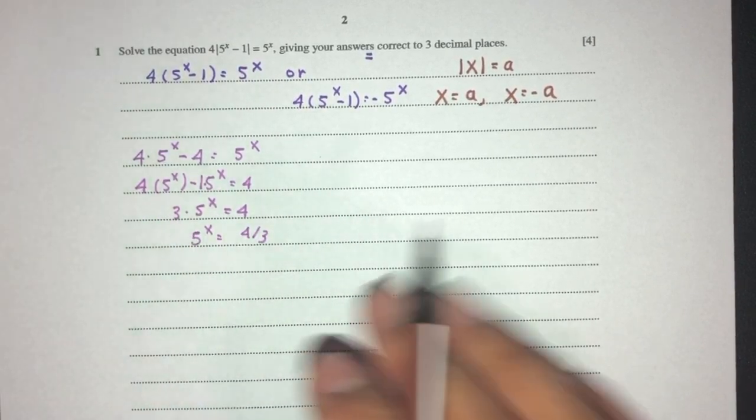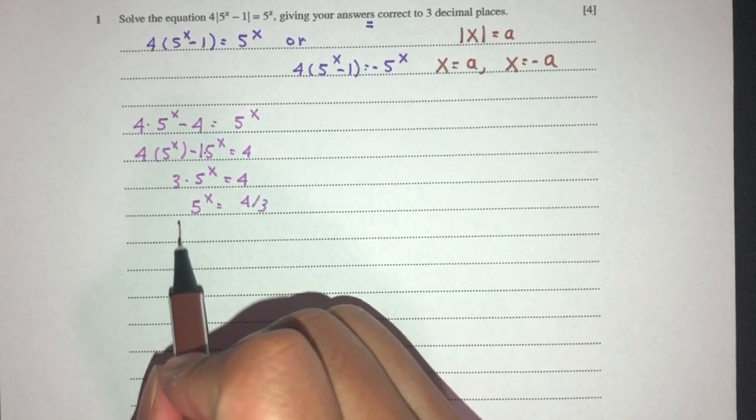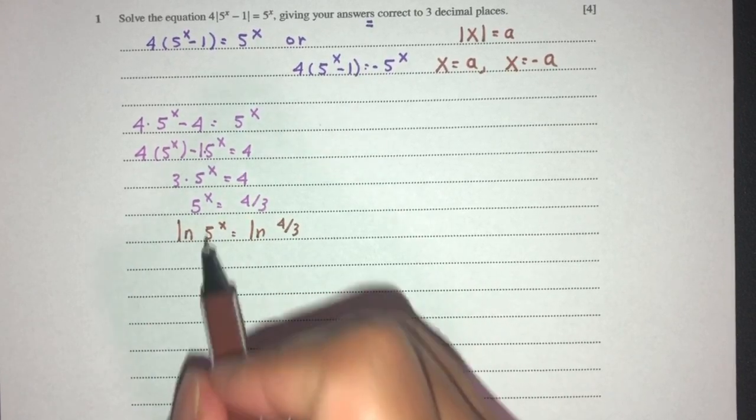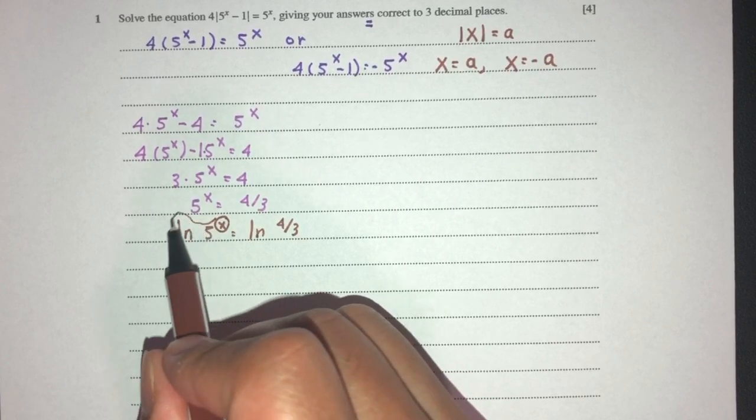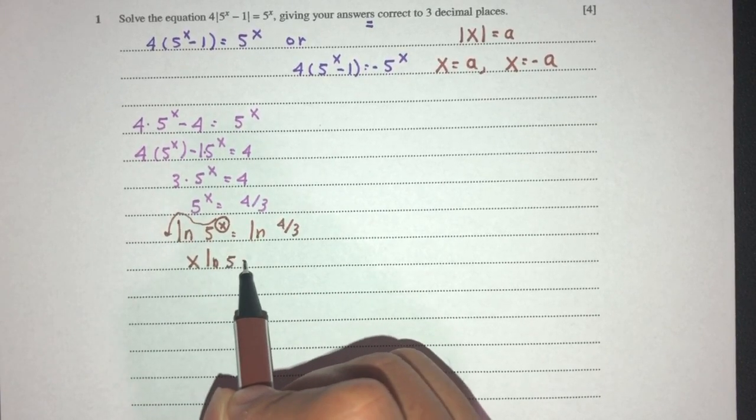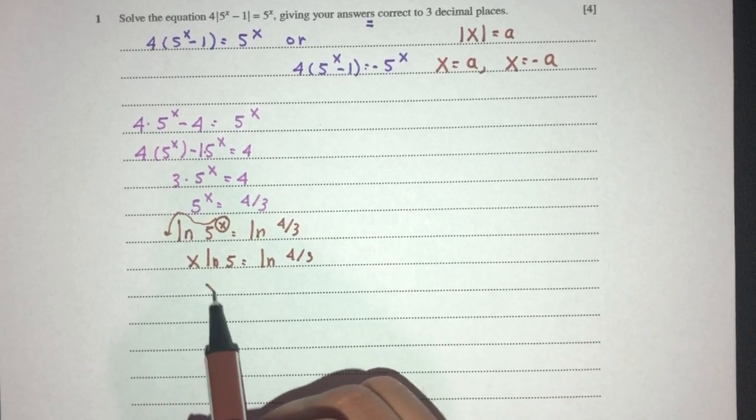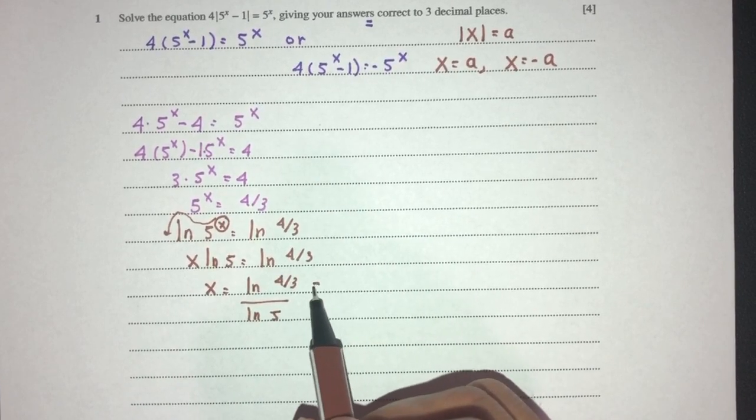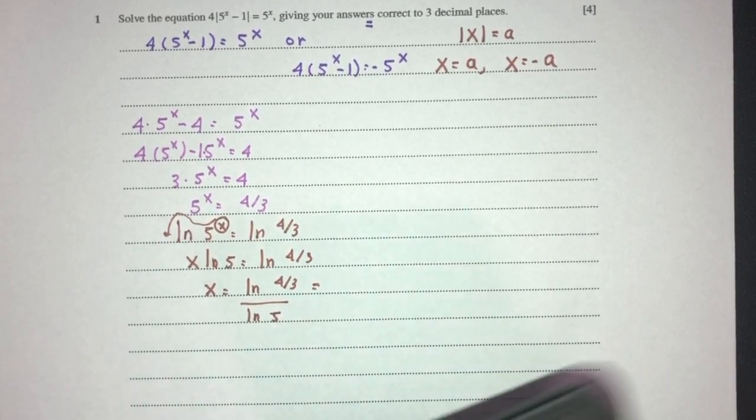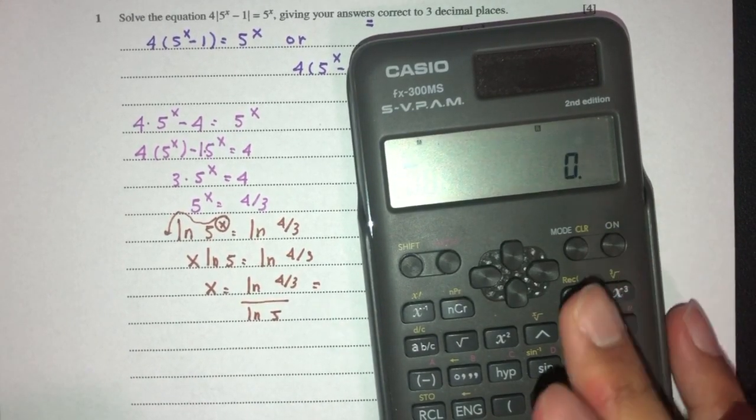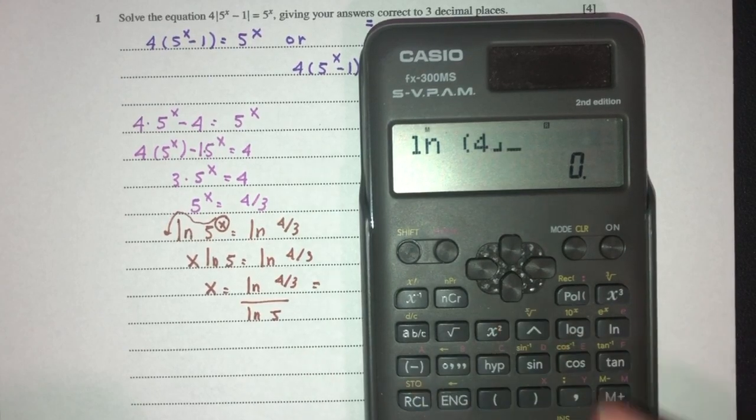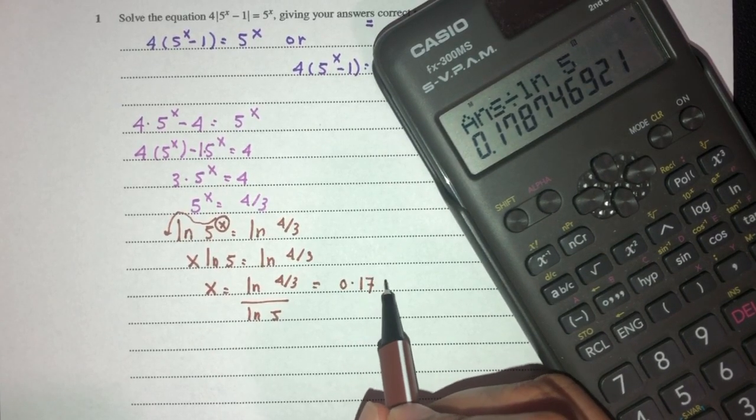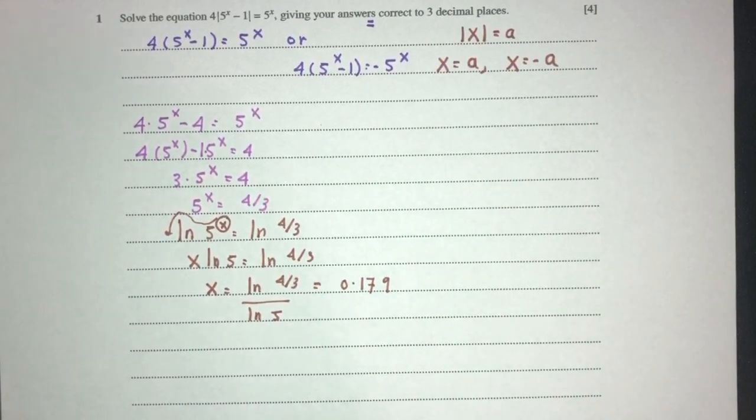Now because x is the power here, I want to bring it down, I have to apply ln or log on both sides, up to you. I can apply ln on both sides. Now, of course, use the laws of logs, that should be x ln of 5 is the value of ln of 4 over 3, therefore x will be simply ln of 4 over 3 divided by ln of 5. That should be 0.179, correct to 3 decimal places. That's the first one.